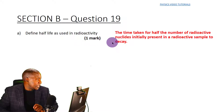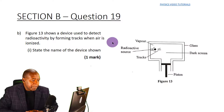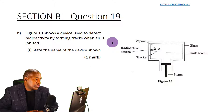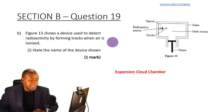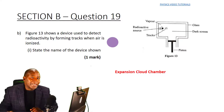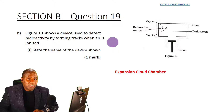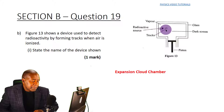In part b, it's a method of detection of radioactivity. Figure 13 shows a device used to detect radioactivity by forming tracks when air is ionized. The name of this device is an expansion cloud chamber.